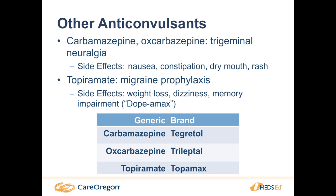Other anticonvulsants we can use for pain are carbamazepine and oxcarbazepine, which both carry an indication for trigeminal neuralgia but could be considered for chronic pain further along the line. Topiramate carries an indication for migraine prophylaxis. With topiramate's side effects, you may have heard the nickname 'Dopamax' — it can cause confusion, memory impairment, and patients say it makes them feel a little dopey. But it does work fairly well for migraine prophylaxis.